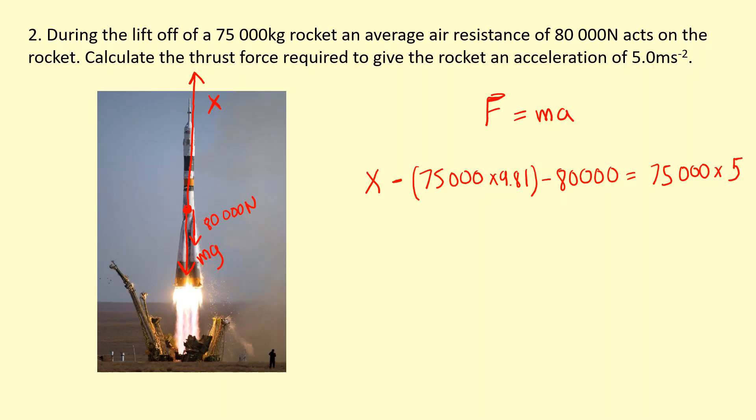So if I bring all the negative numbers to the other side I get 375,000, that's the mass times acceleration, plus 80,000 plus the weight of the object which is 735,750, that gives me a thrust upwards of 1,190,750. We can see this is obviously the biggest force.